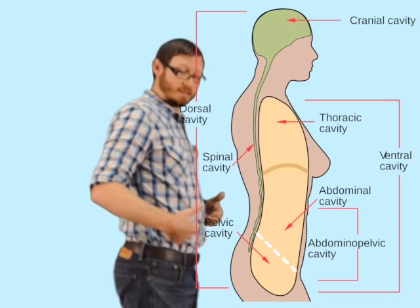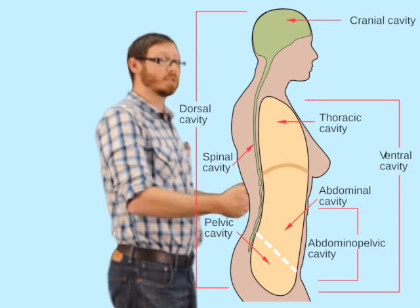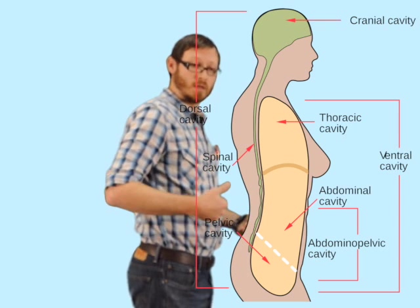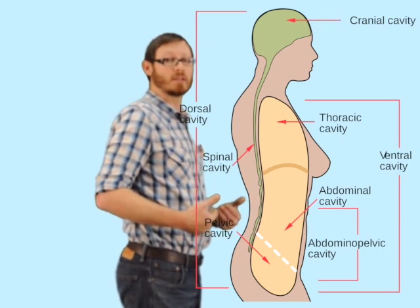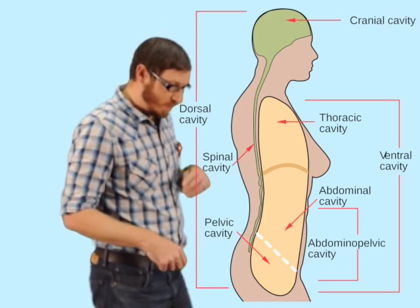The difference here is that the abdominal and pelvic cavities are not physically divided by any particular structure that cuts them into two separate cavities. It's more of a conceptual differentiation than the physical differentiation between the thoracic and the abdominal pelvic cavity. We will expect you to be able to, if we give you an organ, know what cavity it's in.